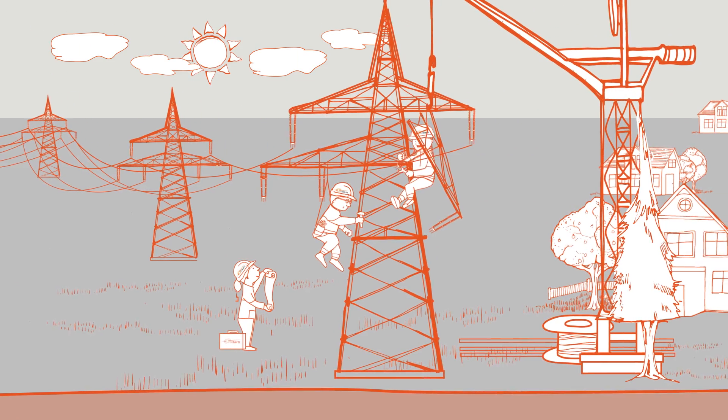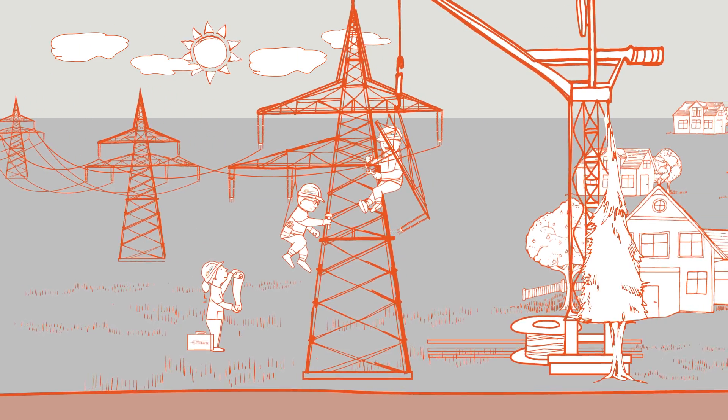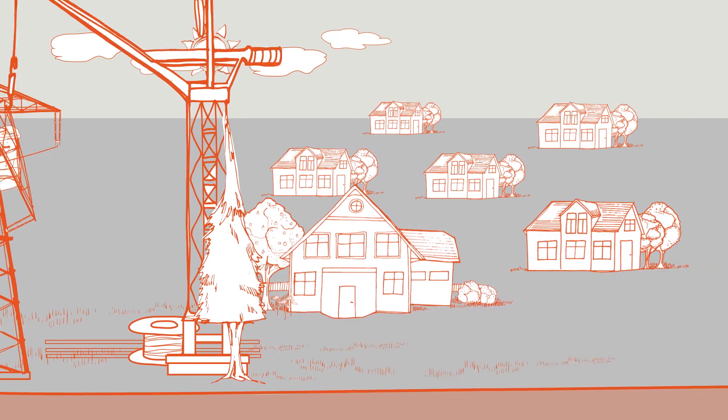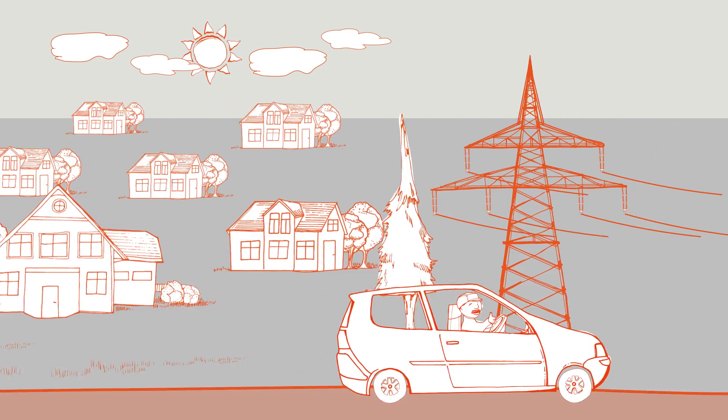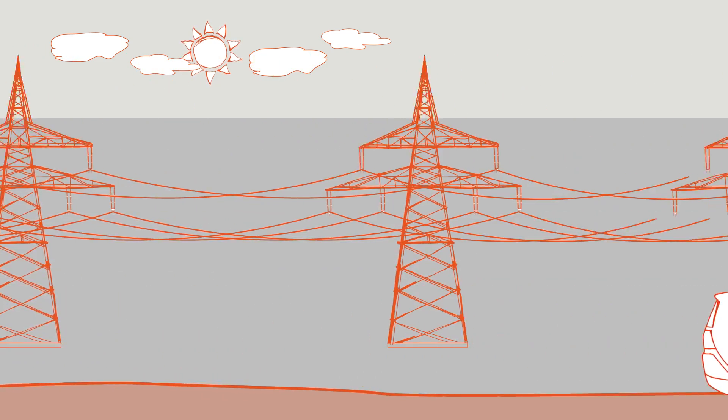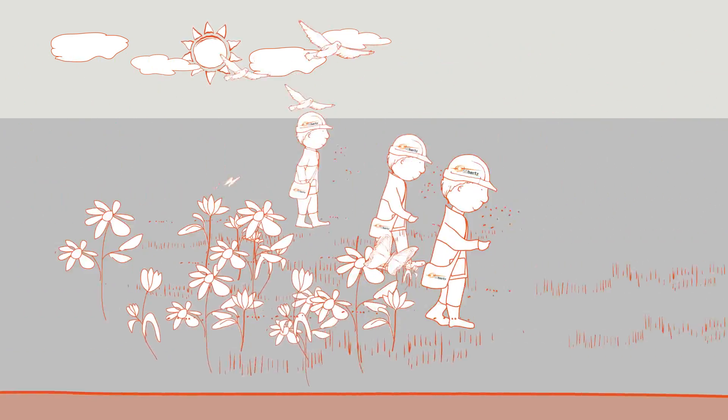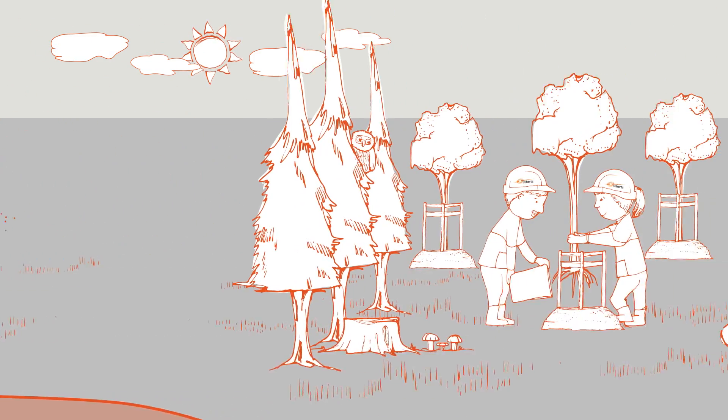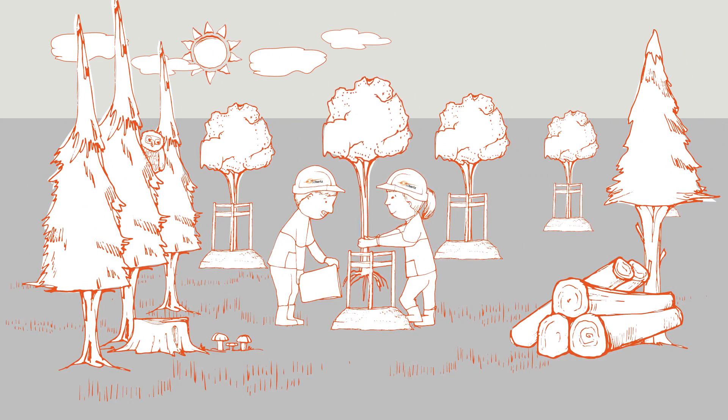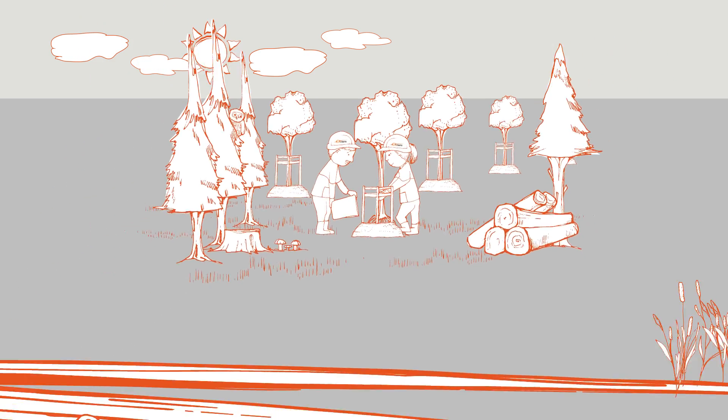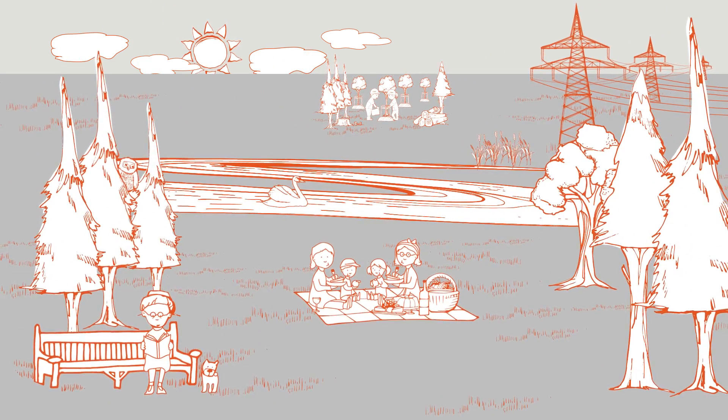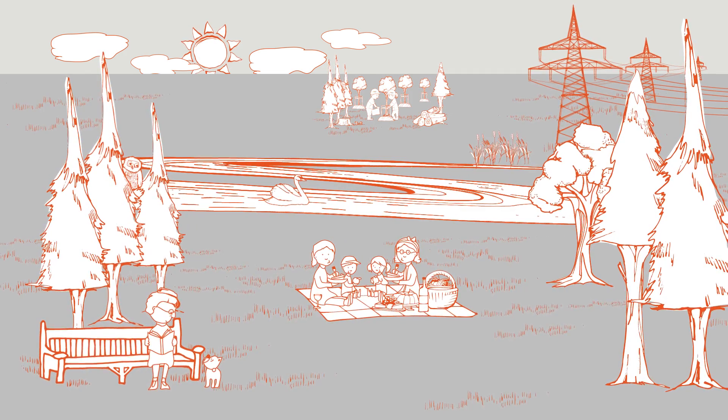When 50 Hertz decides to build new lines, we respect certain rules. We avoid residential areas wherever possible, bundle the lines with other infrastructures such as streets or railways, and try to affect natural areas as little as possible. We compensate any environmental impact. Protecting human beings, wildlife, and nature is our highest priority.